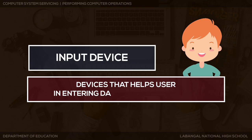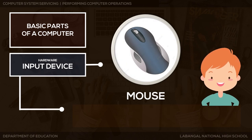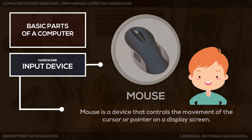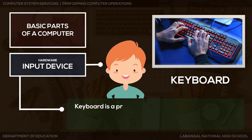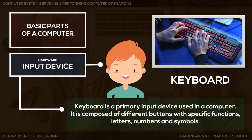First, we have input devices — these are devices that help users in entering data into the computer. The first example is a mouse: a device that controls the movement of a cursor or pointer on a display screen. Next, we have the keyboard — it is the primary input device used in a computer, composed of different buttons with specific functions, letters, numbers, and symbols.